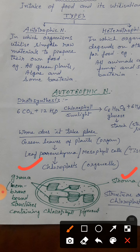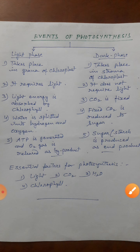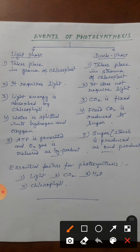To plant ke leaf mein, leaf ke andar parenchyma tissue mein, parenchyma tissue ke jo cells hain, uske chloroplast organelle mein photosynthesis hota hai. Ab photosynthesis ka mechanism kya hai? Isme hum dekhte hain kya kya events hain. Photosynthesis ke poore reaction ko hum do part mein baat sakte hain: that is called light phase and dark phase.